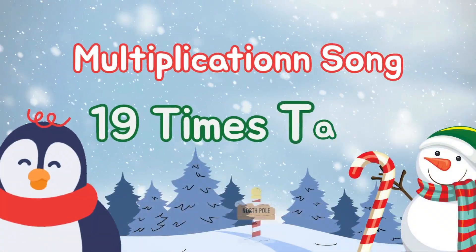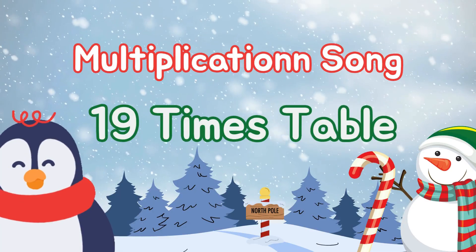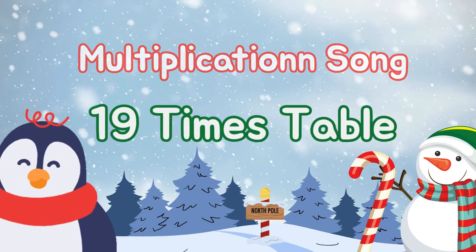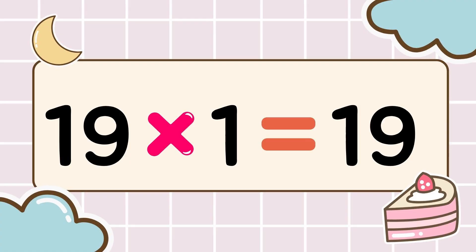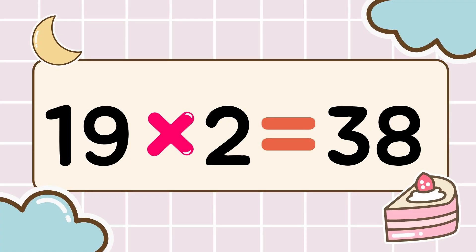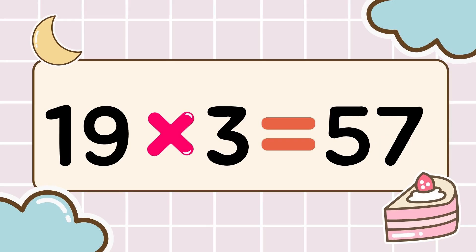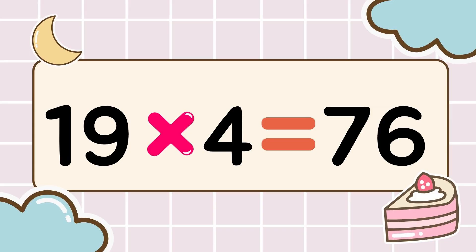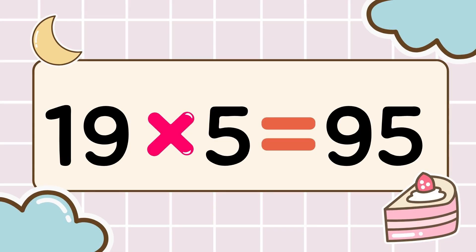Math time, let's multiply! Let's have fun while we memorize. 3, 2, 1, go! 19 times 1 is 19, 19 times 2 is 38, 19 times 3 is 57, 19 times 4 is 76, 19 times 5 is 95.